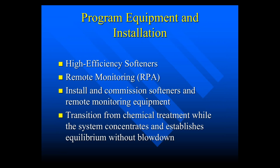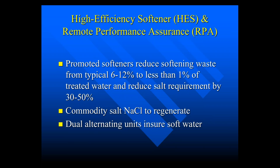The WCTI equipment includes high efficiency softeners and remote monitoring, which records both the water usage and the regeneration. They'll install and commission the softeners and transition regular treatment to zero blowdown treatment. Their high efficiency softeners reduce softening waste, typically 6 to 12 percent, and less than 1 percent of the treated water. They reduce the salt requirement by 25 to 50 percent. They use regular salt and they've got alternating softeners so that you've always got soft water supplied to the tower.